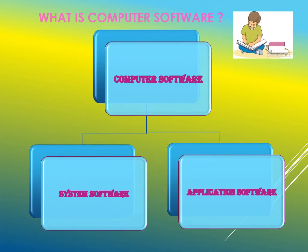Let us learn what computer software is. Computer software means the things which are displayed on the screen or monitor. We can see it but cannot touch it. For example, a desktop icon — we can see it but cannot touch it. Software is a set of instructions, data, or programs used to operate a computer and execute specific tasks. Software is divided into two categories: system software and application software.